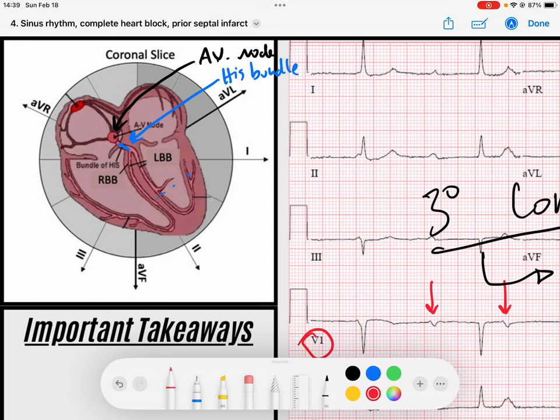Now remember, if the AV node is what gets completely blocked, I still have my His bundle that can create my junctional escape rhythms. And those junctional escape rhythms are usually at a rate of 40 to 60 beats per minute, exactly what we see here. But, in another case, if the His bundle is what completely got blocked, we are unable to create and generate a junctional escape rhythm. We can only generate a ventricular escape rhythm.